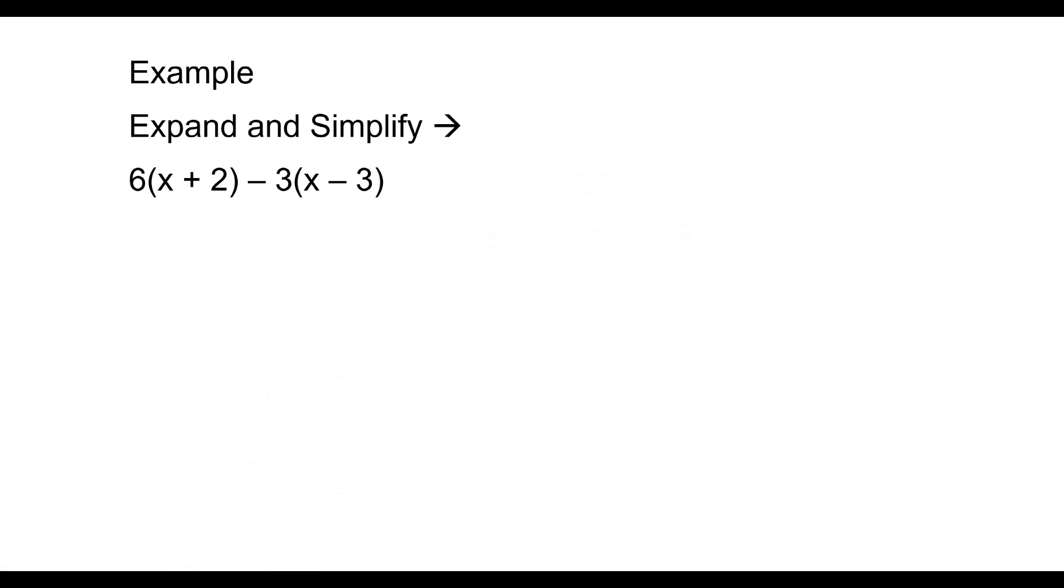A slightly trickier example again. I'm going to expand my first bracket, giving me 6X plus 12. Then I'm going to be really careful. We have minus 3 times X minus 3X. Minus 3 times minus 3 is plus 9.